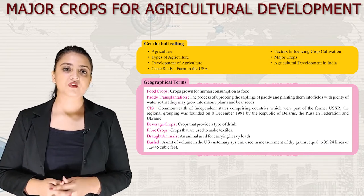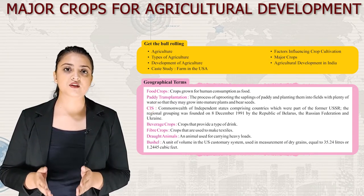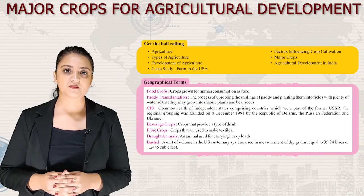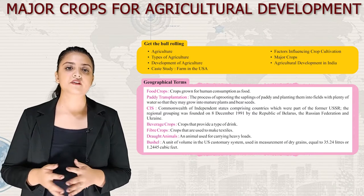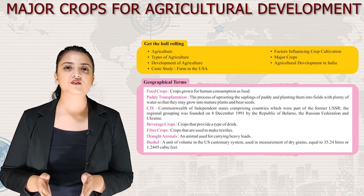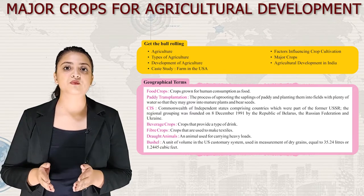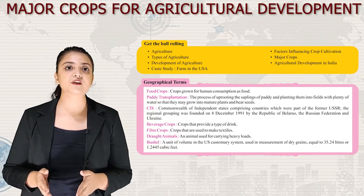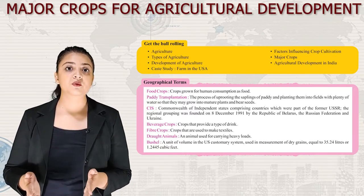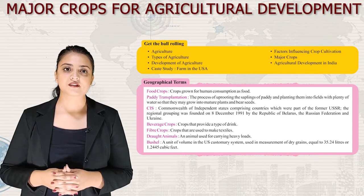Food Crops: Crops grown for human consumption as food are known as food crops. Paddy Transplantation: The process of uprooting the saplings of paddy and planting them into fields with plenty of water so that they may grow into mature plants and bear seeds.